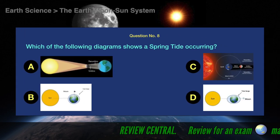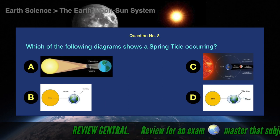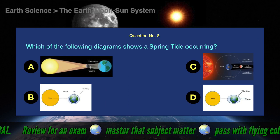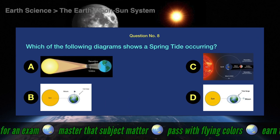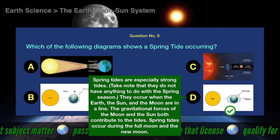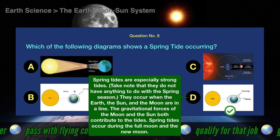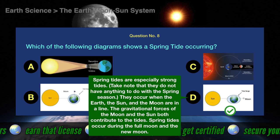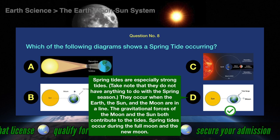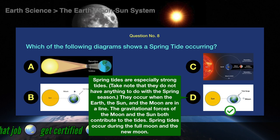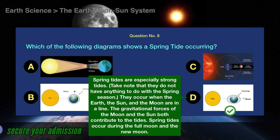Question number 8. Which of the following diagrams shows a spring tide occurring? The correct answer is D. Spring tides are especially strong tides — note that they do not have anything to do with the spring season. They occur when the Earth, the Sun, and the Moon are in a line. The gravitational forces of the Moon and the Sun both contribute to the tides. Spring tides occur during the Full Moon and the New Moon.